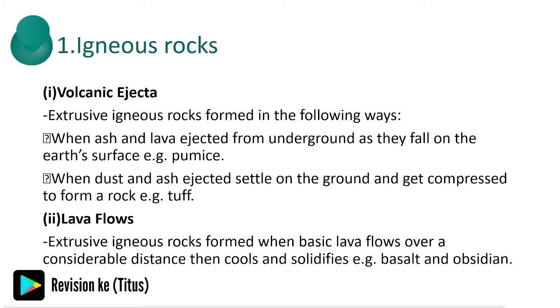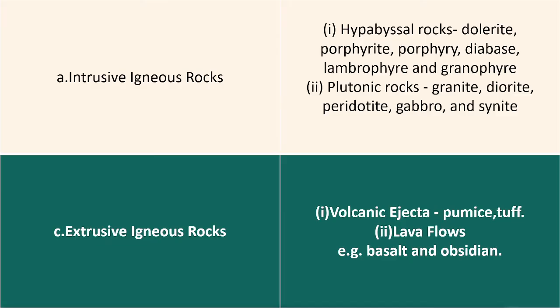Looking at a summary table of igneous rocks: under intrusive igneous rocks we have hypabyssal rocks and plutonic rocks. Under extrusive igneous rocks we have volcanic ejecta and lava flows.